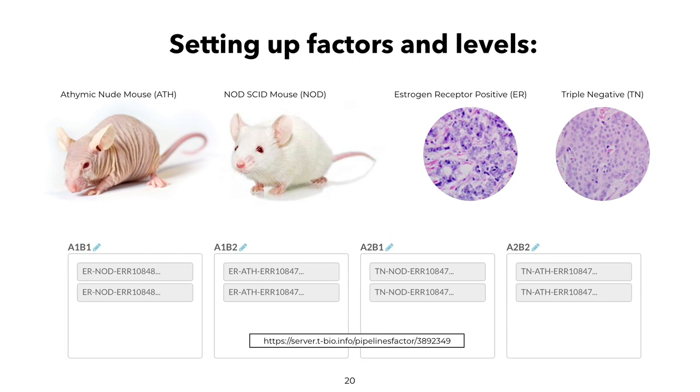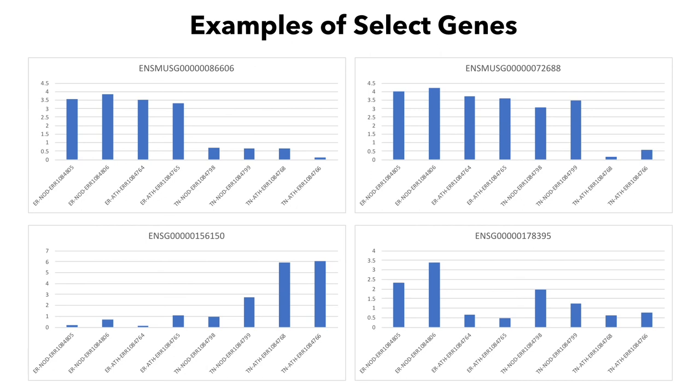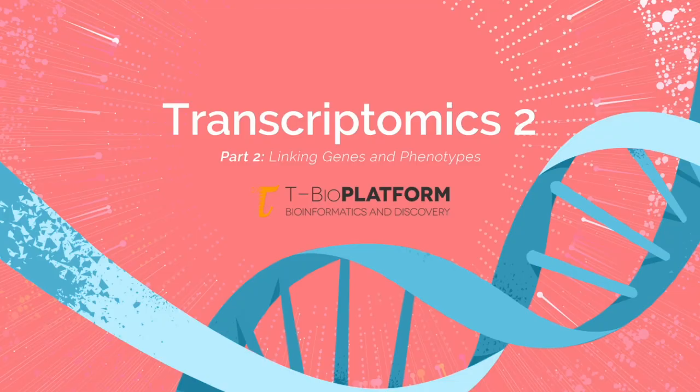In our example, we will have two factors: cancer type and mouse type. We will also learn how to set up a pipeline using these factors and levels to conduct factor regression analysis. As a result, we can turn to biological interpretation of found genes and learn about gene function in the context of differential gene expression, or the factors we found to be associated with a certain expression pattern.